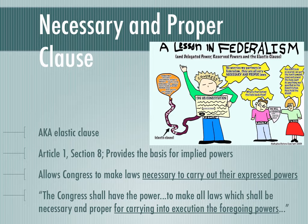The Necessary and Proper Clause does not allow Congress to make any law — their power is still limited. They cannot simply make any law they want and claim it's necessary and proper. They can only use this clause if that law is necessary to carry out their expressed powers. It has to match something else that was listed — their written-down, expressed, enumerated powers. That is when they can use this. It's a very important distinction to know.